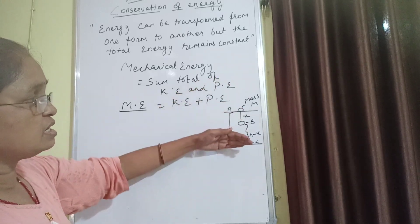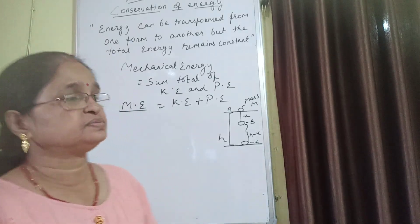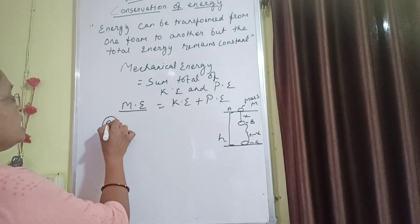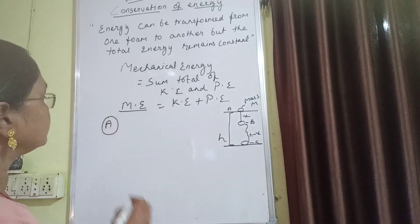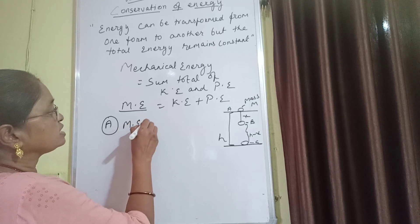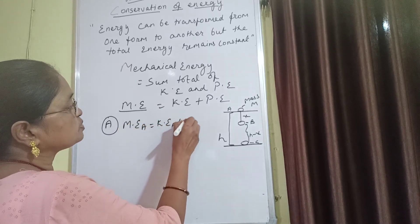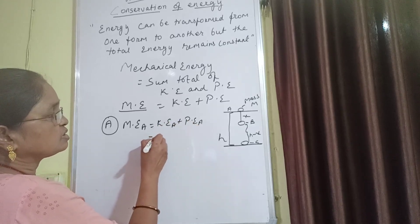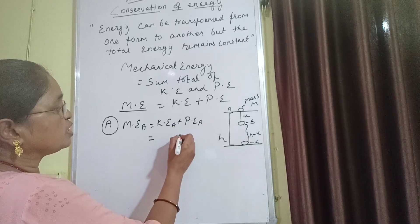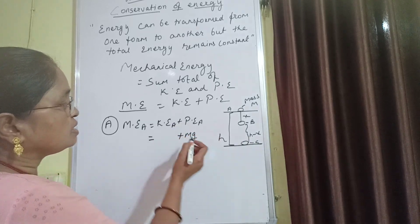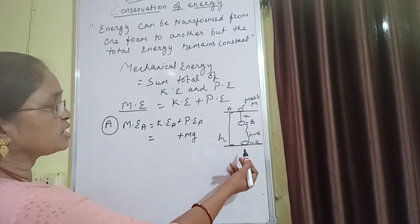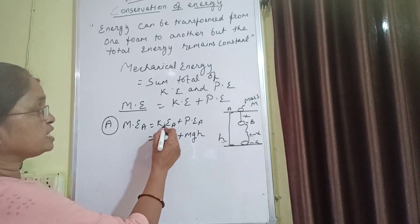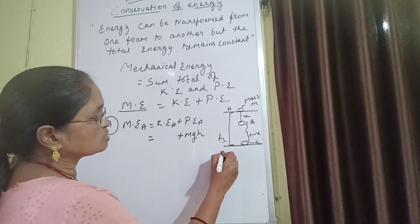At every position A, B, and C, let us find out the mechanical energy. Starting with case A: when the body is at A, what is the mechanical energy? Mechanical energy at A equals kinetic energy at A plus potential energy at A. Let us discuss potential energy at A first. We know the formula for potential energy is MGH, where M is mass, G is acceleration due to gravity, and height is H.